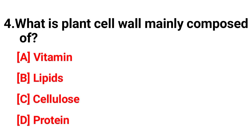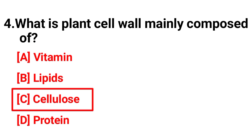Question number four: what is the plant cell wall mainly composed of? The correct answer is option C, cellulose.